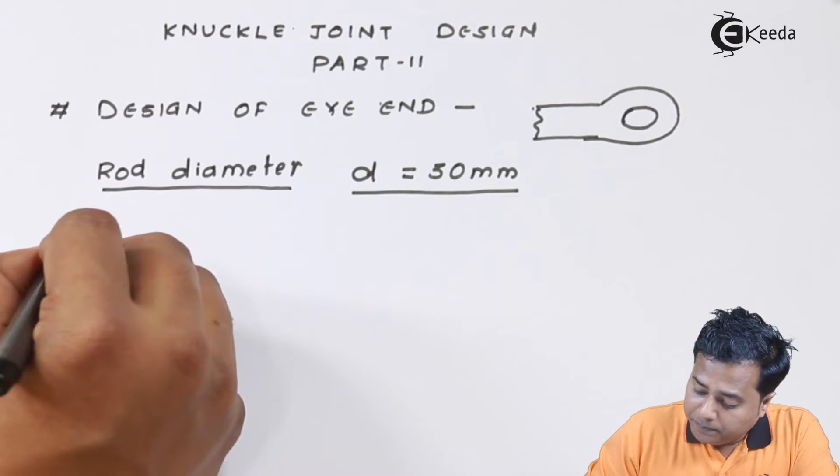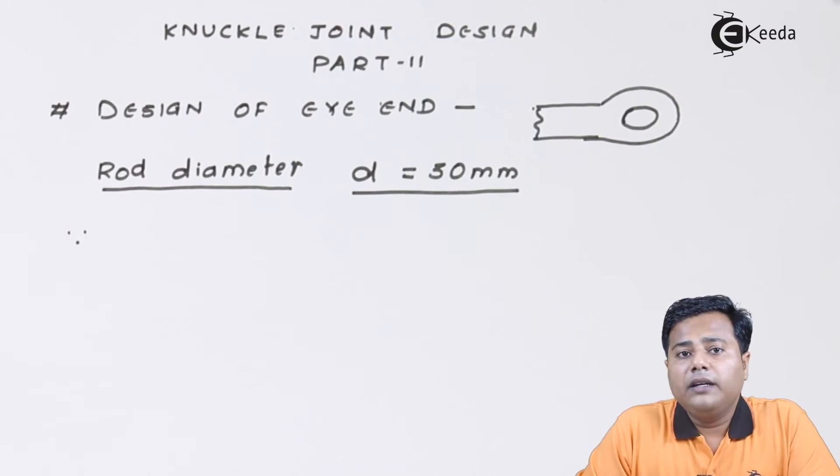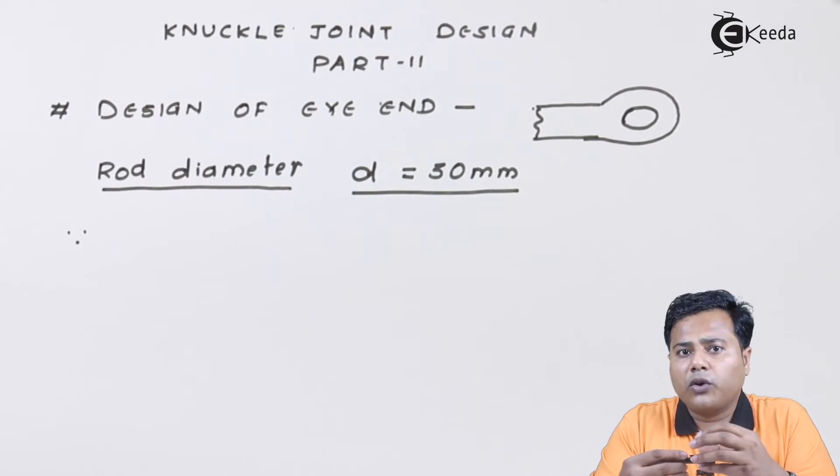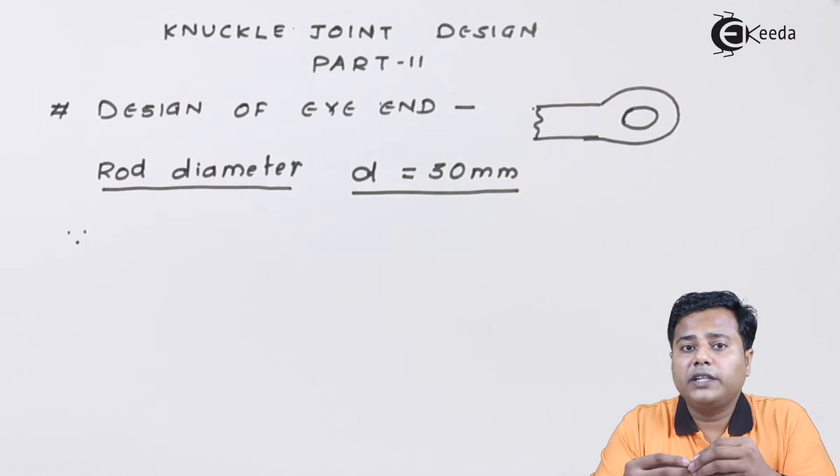Now we know that the eye end has two aspects of failure. One of them is tensile failure because the eye end is going to be pulled. There is axial load acting on the rod connected to the eye end and hence there are chances that it will fail under tension.